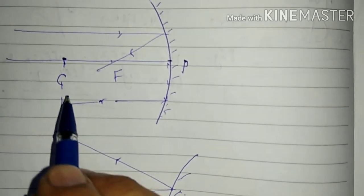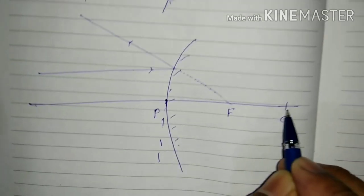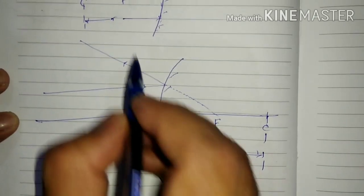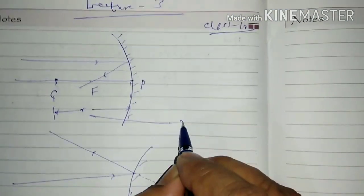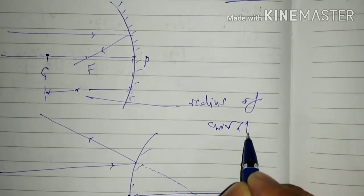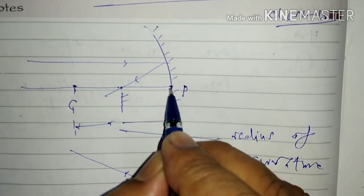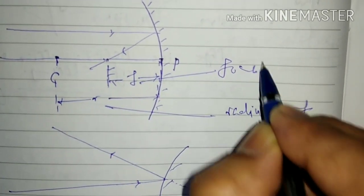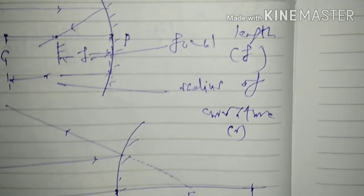The distance between center of curvature and pole — in both mirrors we are seeing side by side — is called the radius of curvature. The distance between focus and pole is called the focal length, represented by F, and the radius of curvature is represented by R.